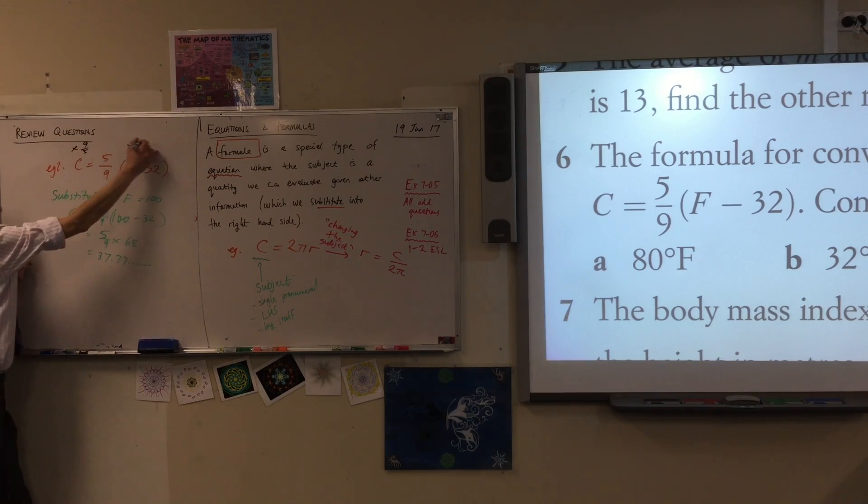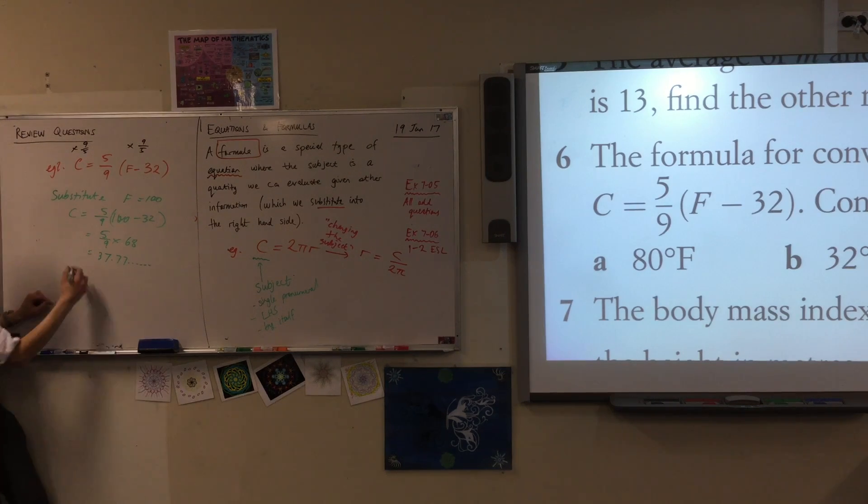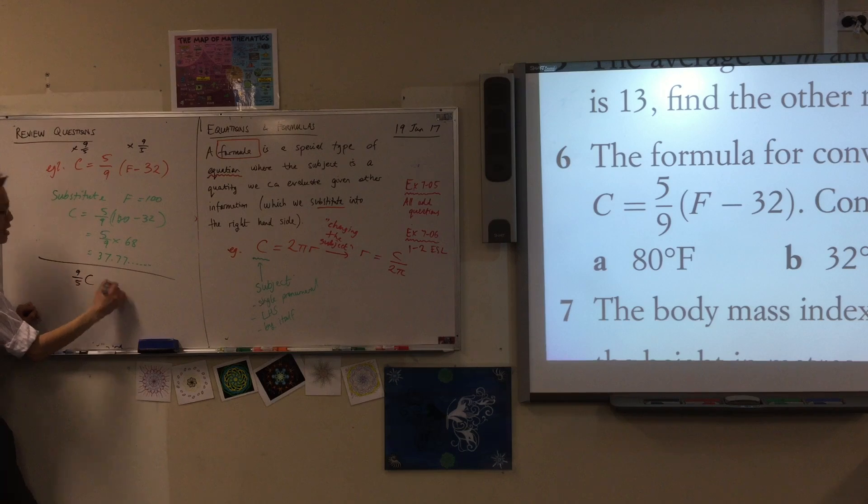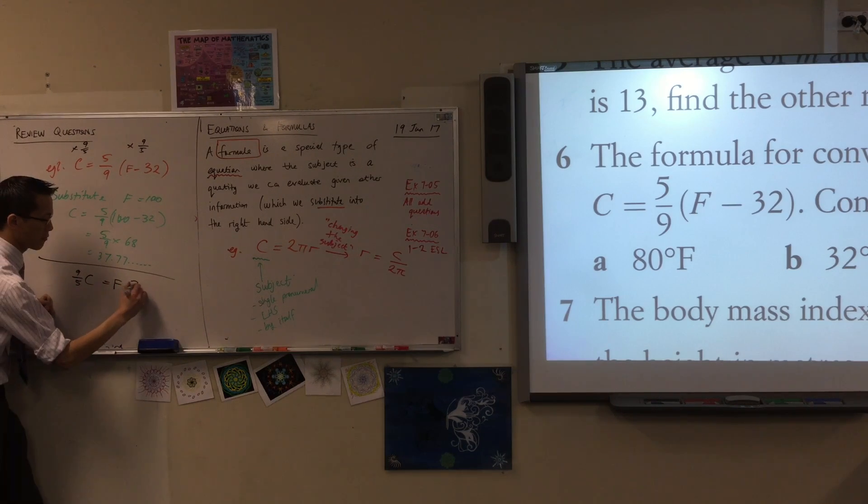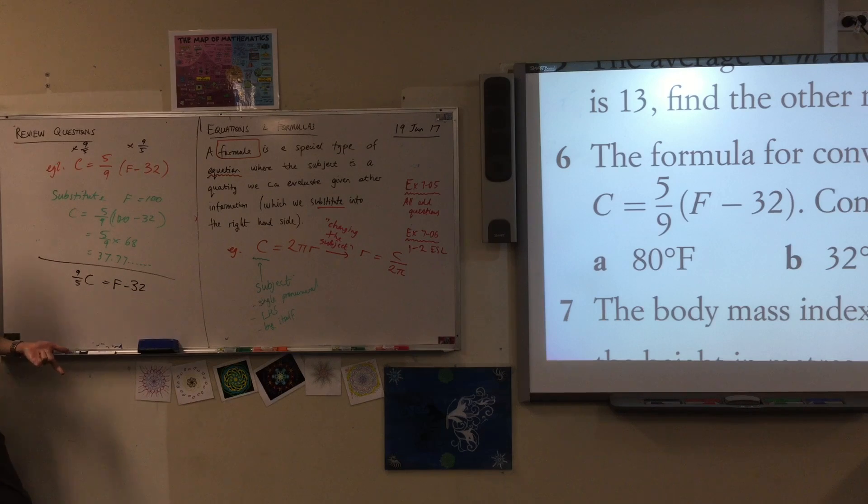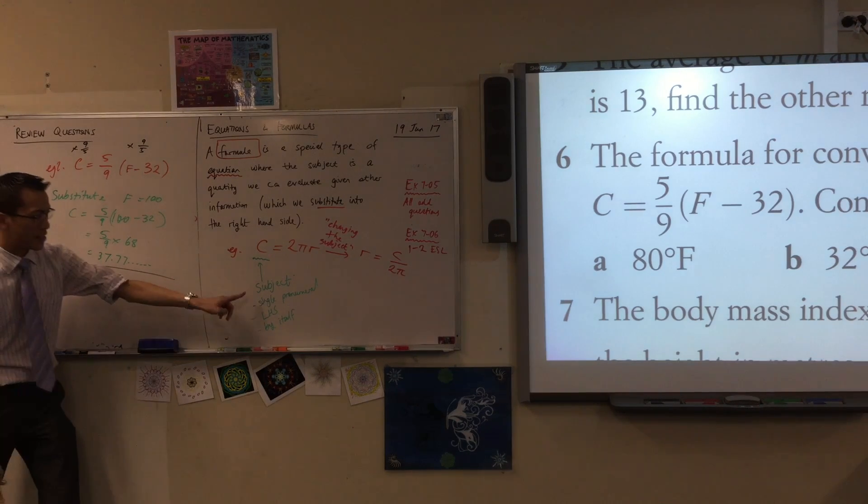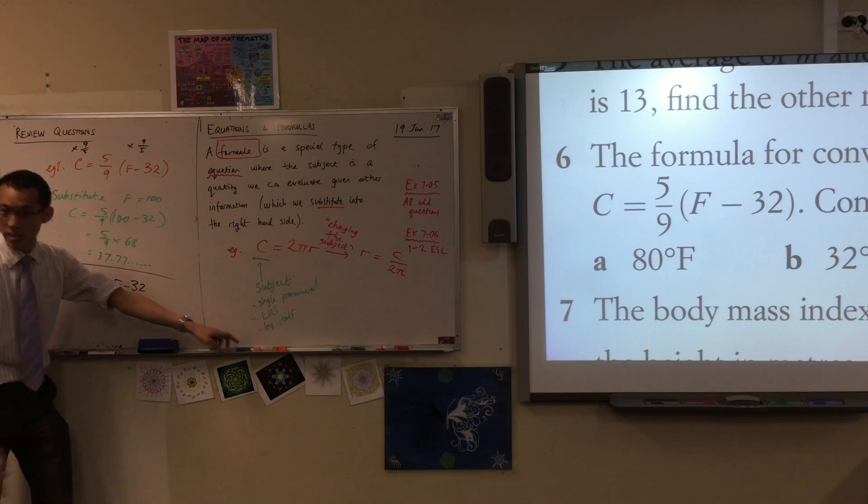So if I multiply both sides by nine over five, that leaves me with nine over five C equals what? Just that. And you can see now there's only one step left to get F as a single pronumeral on the left-hand side by itself.